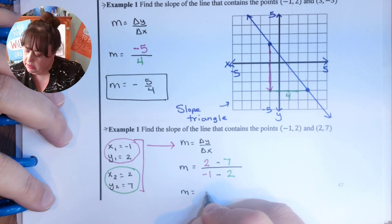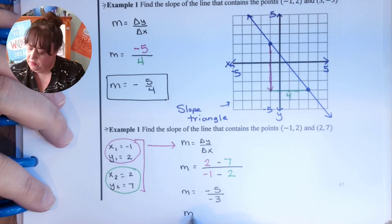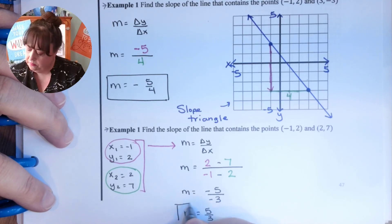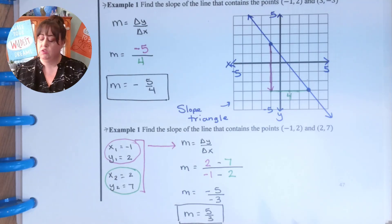Two minus seven is negative five. Negative one minus two is negative three. And a negative over a negative is a positive. So my answer is five thirds. If I had started with the point two seven, I would have had the same exact answer. It just would have been five thirds instead of negative five over negative three.